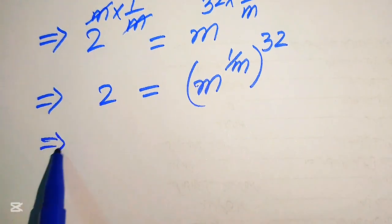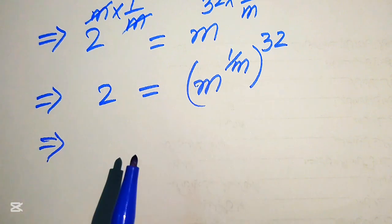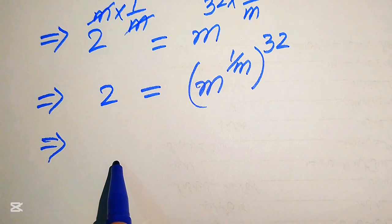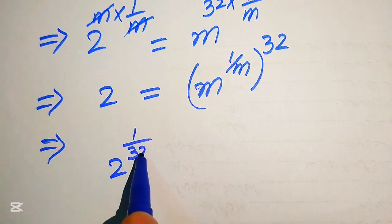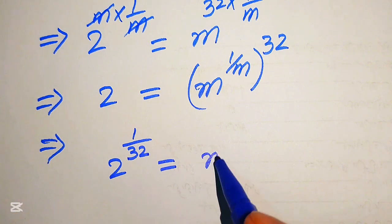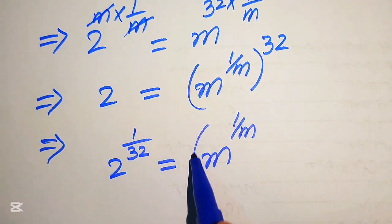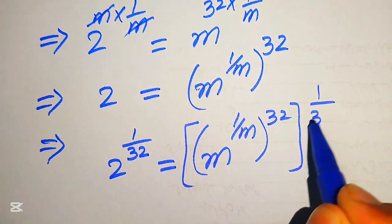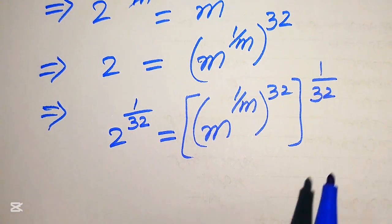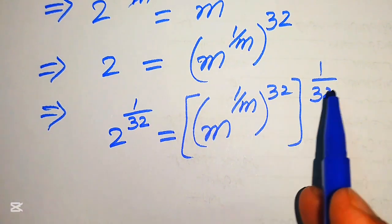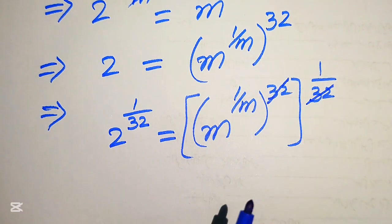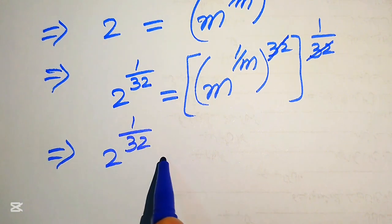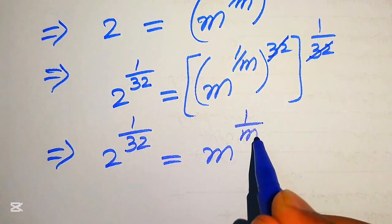In the next step, we need to move this 32 to the left hand side. In order to do that, we take the 32nd root on both sides — that is, we take the 1 over 32 power on both sides. We have m to the power of 1 over m, whole power 32, raised to 1 over 32. These exponents multiply: this 32 is cancelled out by this 32, and we obtain 2 to the power of 1 over 32 equals to m to the power of 1 over m.